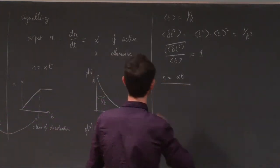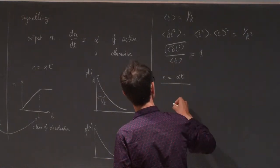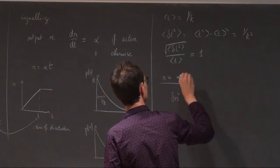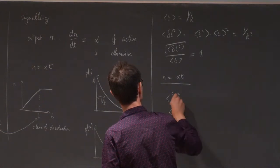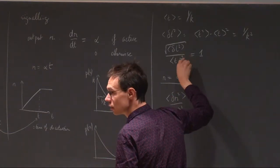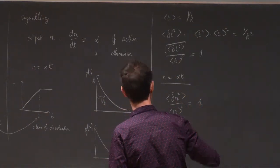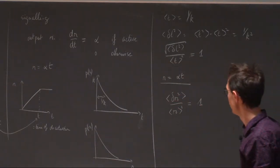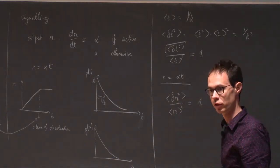Since the output is strictly proportional to the time it stays activated, there's a square here. So that's the puzzle: you get 100% fluctuations when you have something that's exponentially distributed.